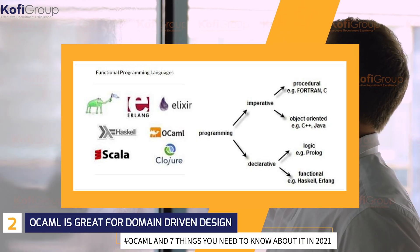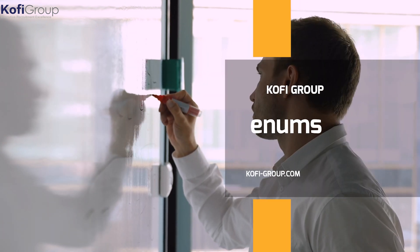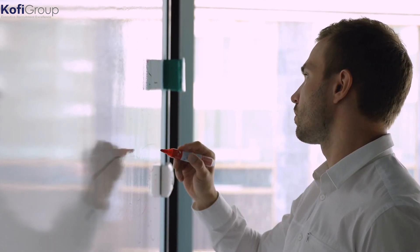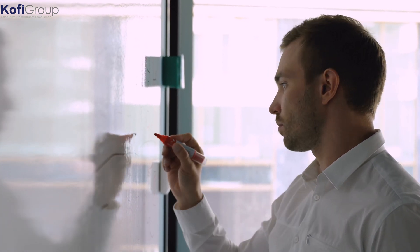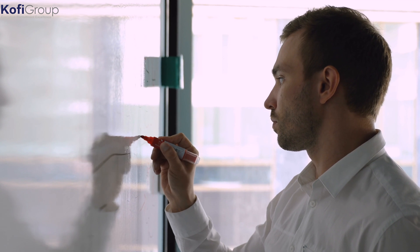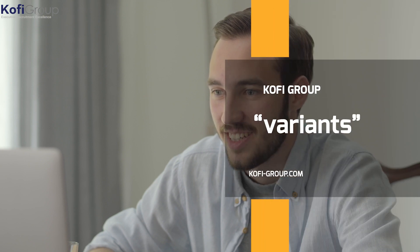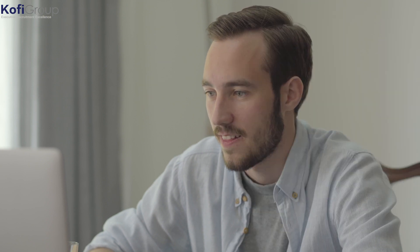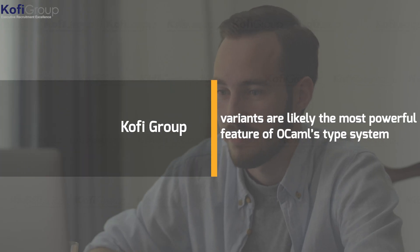2. OCaml is great for domain-driven design. Traditional data structures like enums can be quite limiting when trying to model real-world domains. In mainstream languages, this leads to buggy implementations that are overly complex and hard to maintain over time. OCaml, like most other ML languages, has a killer feature called variants — user-defined types and data structures that make domain modeling incredibly intuitive. Despite its simplicity, variants are likely the most powerful feature of OCaml's type system.